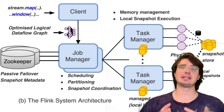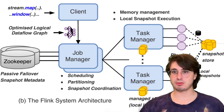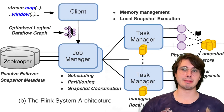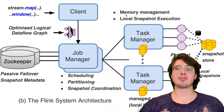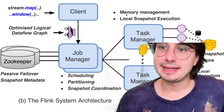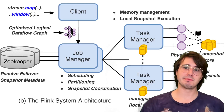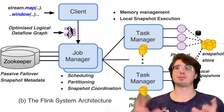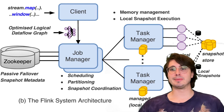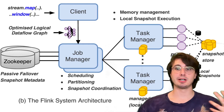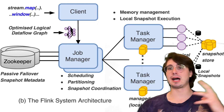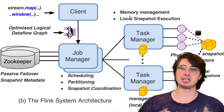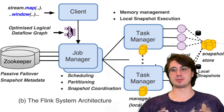RocksDB state backend is the recommended and most common choice for production applications with large state requirements. It stores local state on disk and handles state sizes far exceeding available memory. It also has a built-in incremental checkpoint feature, so by just enabling RocksDB you can reduce checkpoint times and network traffic for large-state applications. However, RocksDB requires careful tuning of internal parameters like block cache size, write buffer configuration, and compaction settings to achieve optimal performance.